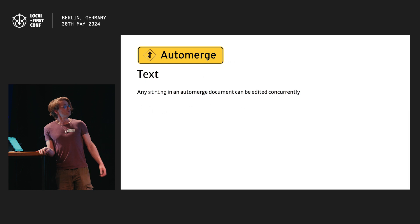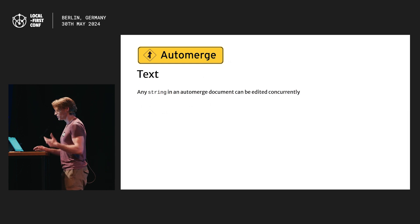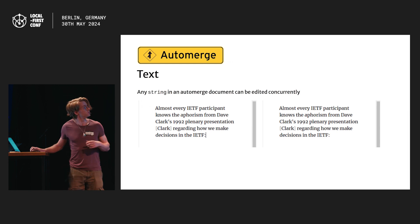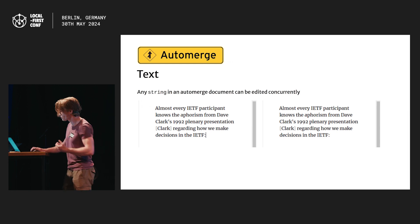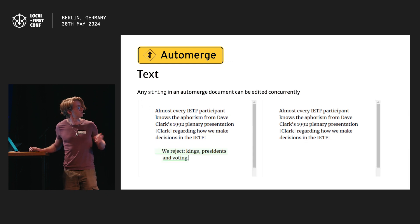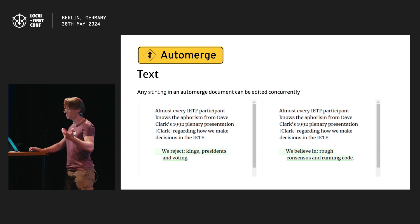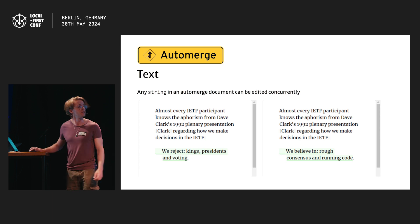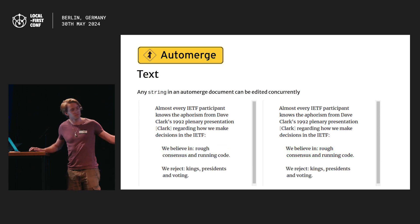Automerge documents are a JSON object, or a JavaScript object in JavaScript at least, and any string in an Automerge document can be edited concurrently. So let's see an example of that. Here we have two editors editing my favourite RFC. The editor on the left inserts this sentence, the editor on the right inserts this sentence. Have a think about what you think should happen when we merge these. Here's what happens in Automerge, and hopefully that's a sensible thing — it's sort of what we would expect.